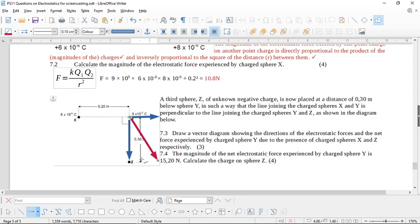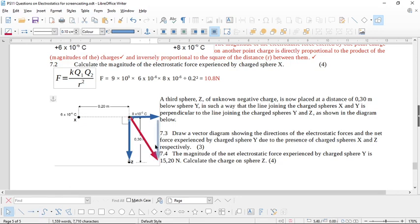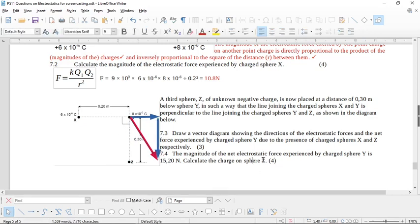So they want you to find this charge here and you already know this value because you just calculated it over here. And they're telling you that this diagonal here is 15.2. So I'm not sure if you can see this but this is part of a triangle. If you make these head to tail you have a vector triangle and this is the hypotenuse of your triangle. So using Pythagoras here.